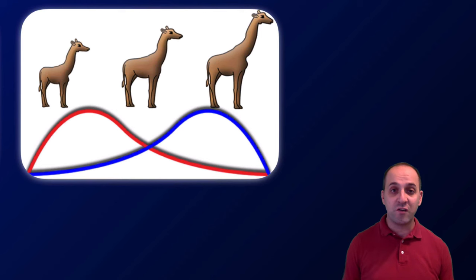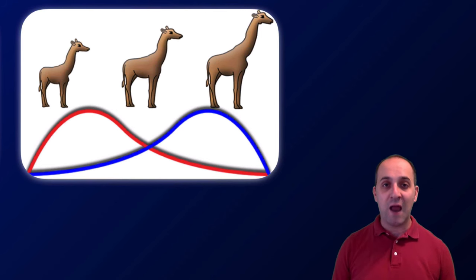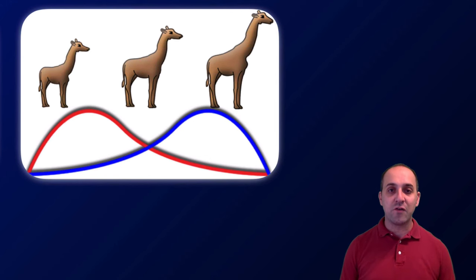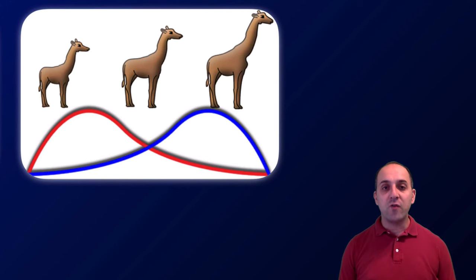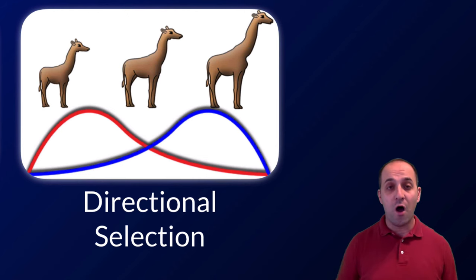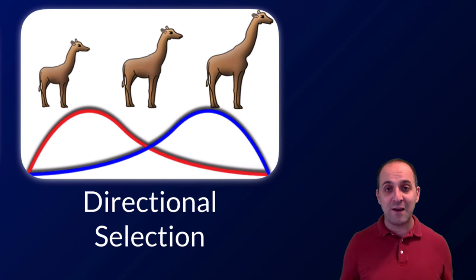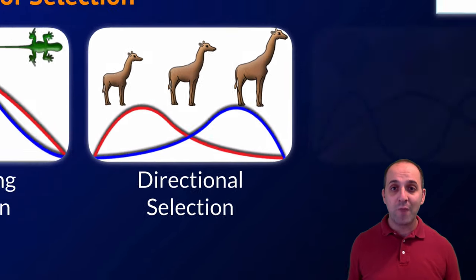Here's a different population of giraffes. Before selection, most giraffes had shorter necks; after selection, most have longer necks. This is called directional selection because we are moving the distribution of the phenotype from one direction to another — directionally affecting that distribution.